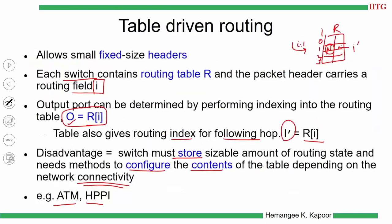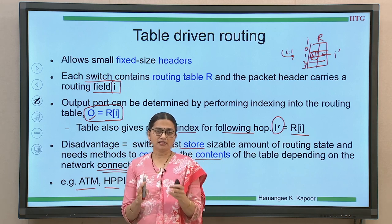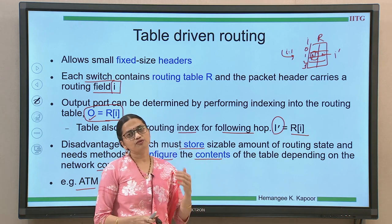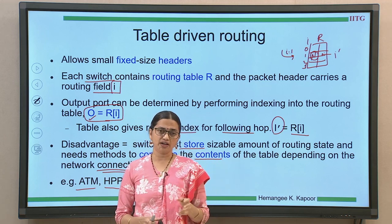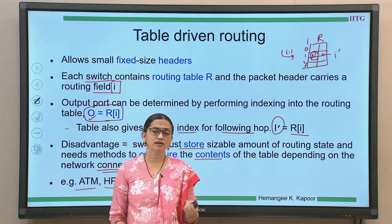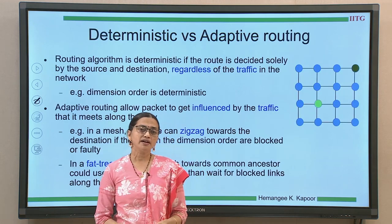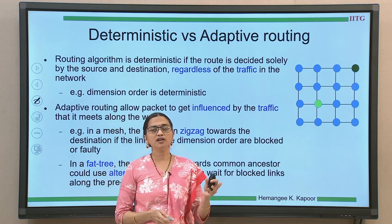All these algorithms — source-based, dimension order, and table-driven — are deterministic because the path is decided from the start. However, this has limitations: it can lead to contention, delays, or possibly deadlock. To solve this, we can use adaptive routing instead of fixed deterministic routing.